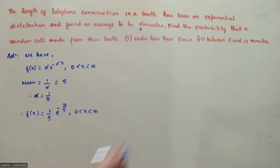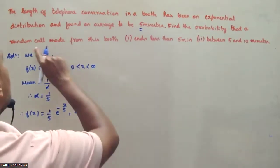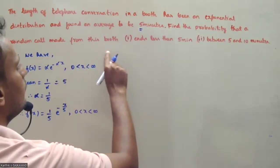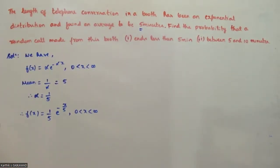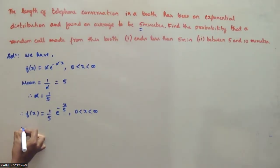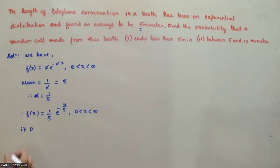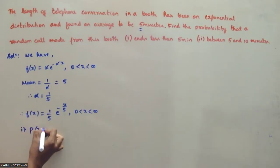First, find the probability that a random call ends in less than 5 minutes. We need to find P(X < 5).